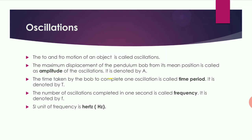Next, amplitude of an oscillation. The maximum displacement of a pendulum bob from its mean position is called the amplitude of oscillation. The mean position is the rest position. It is denoted by the letter A.